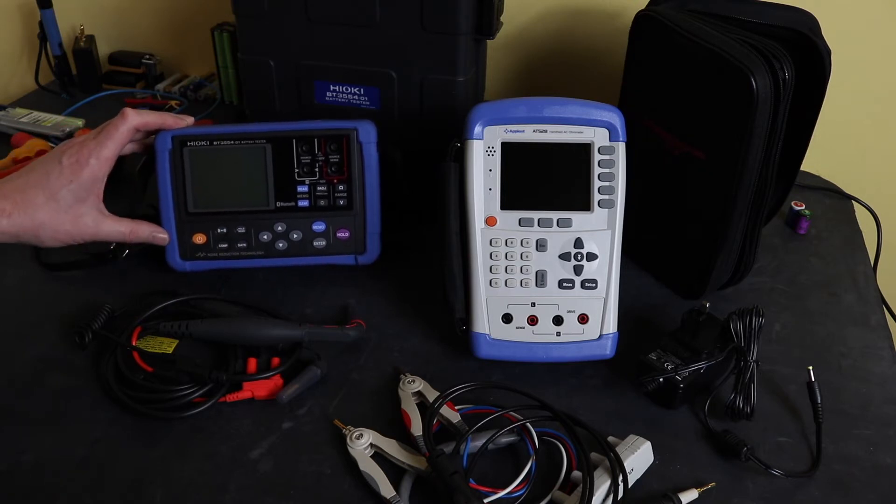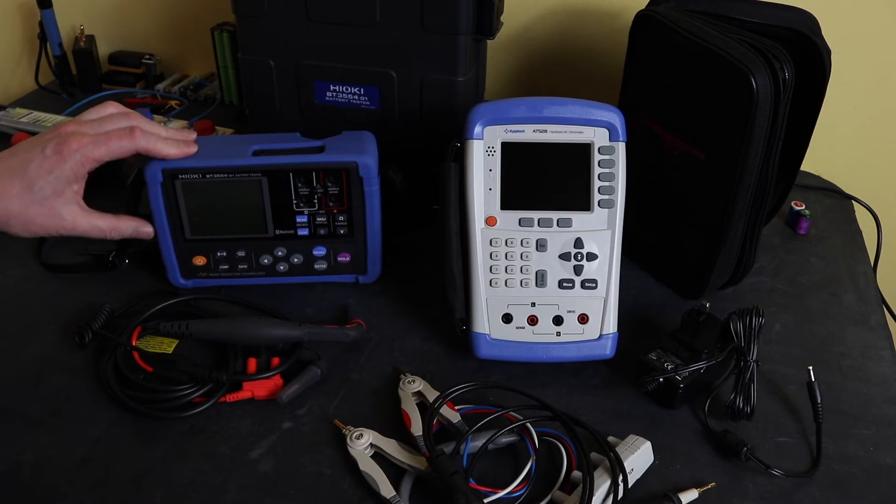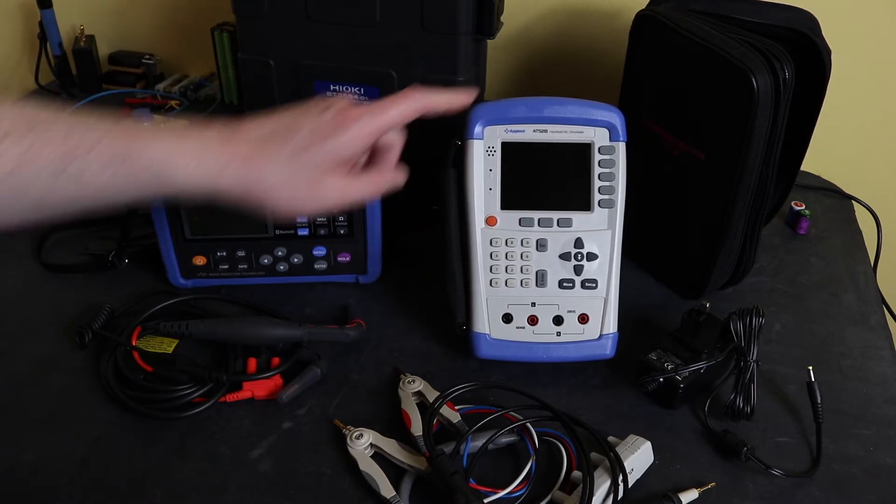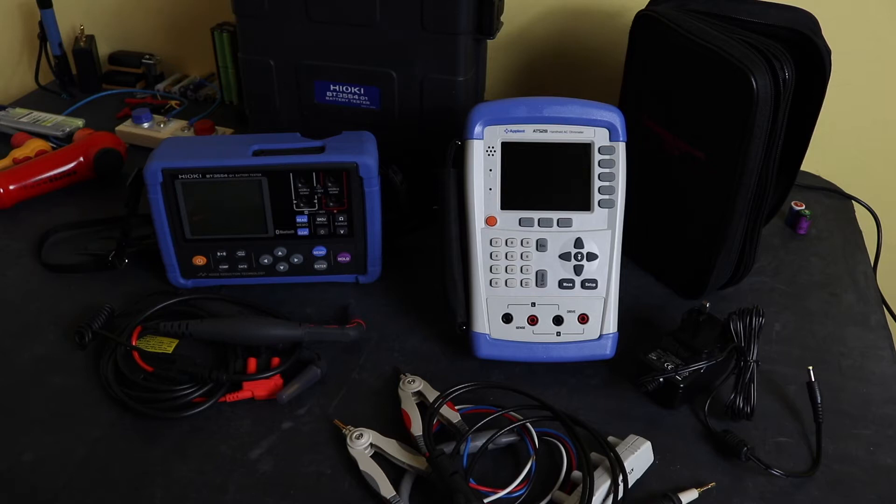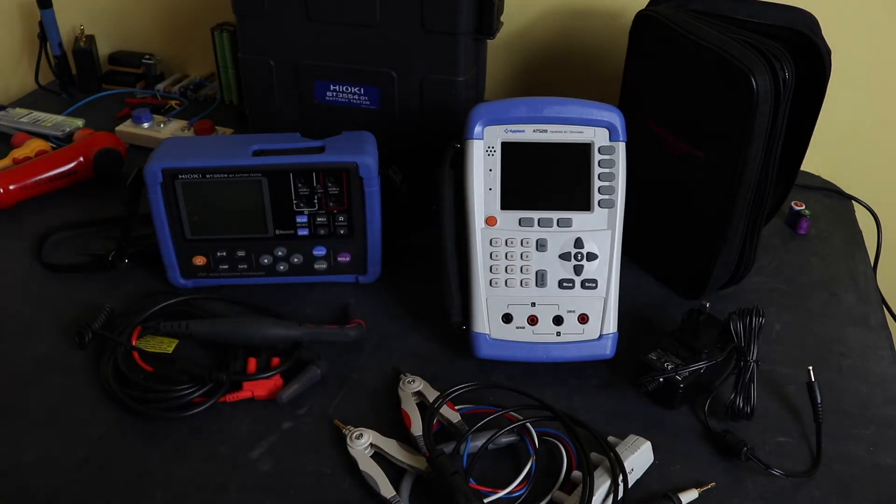I'll also link to the actual road test on the Element 14 website. The Appellant A528 here I've had for a number of years. I bought that specifically to test backup batteries on protection relays and PLCs, and I'll show that later on in the video when I do a bit of testing with it.